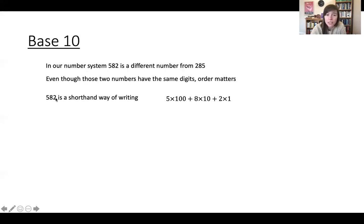So where 582 is shorthand for 5 times 100 plus 8 times 10 plus 2 times 1. You know, 1 is 10 to the 0, 10 is 10 to the 1, 100 is 10 to the 2.